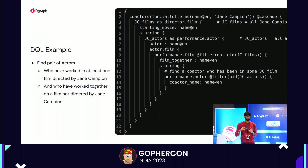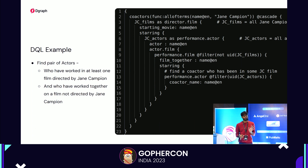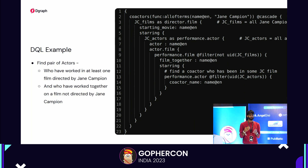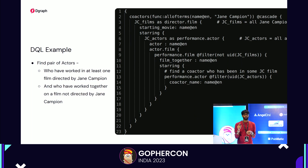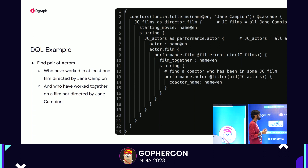I'll give you a quick example of DQL — just to show how powerful it can be. DQL stands for DGraph Query Language. In this example, we're trying to find all pairs of actors who have worked with director Jane Campion, where those actors have also worked together in a movie with another director. In SQL this would require at least three joins. In DQL it's a simple three or four graph traversals to get to the final answer.